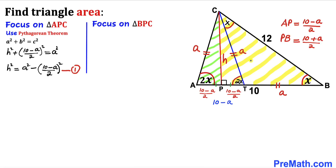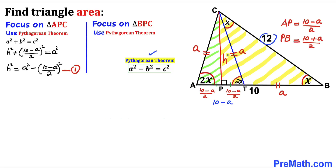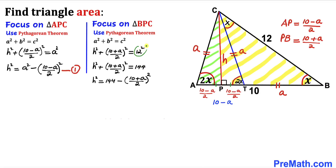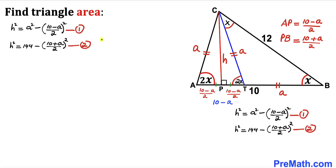Now let's focus on right triangle PBC and apply the Pythagorean theorem. The longest leg is 12, the other sides are H and (10 plus a)/2. So: H² + ((10 plus a)/2)² = 12². Since 12² = 144, isolating H² gives us equation number 2.